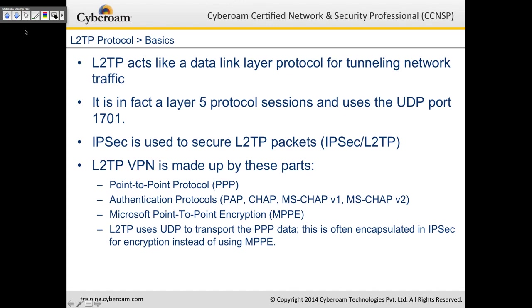Let's have a look at the L2TP protocol — another method of doing VPN. L2TP acts like a data-link layer protocol for tunneling network traffic. It is a layer-5 protocol and uses UDP port number 1701. IPSec is used to secure L2TP packets. CyberROM doesn't offer pure L2TP because L2TP itself is not very secure, so we use IPSec to tunnel L2TP packets.